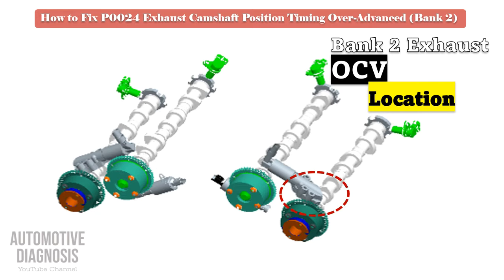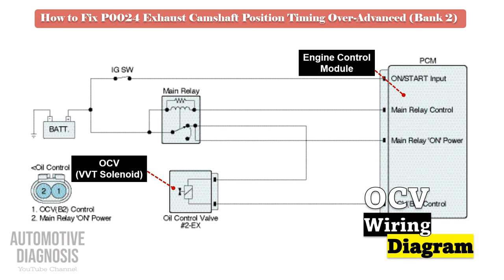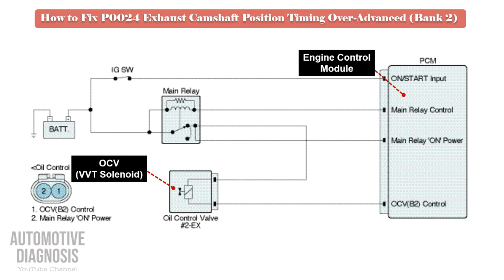Before doing anything, it is very important to review the OCV wiring diagram. As soon as you turn the ignition switch to the on position, power supply will be provided to the OCV via the engine main relay, so you must have battery voltage on that pin. Also, the OCV is controlled by the PCM using the other wire, so the control line must be checked too.